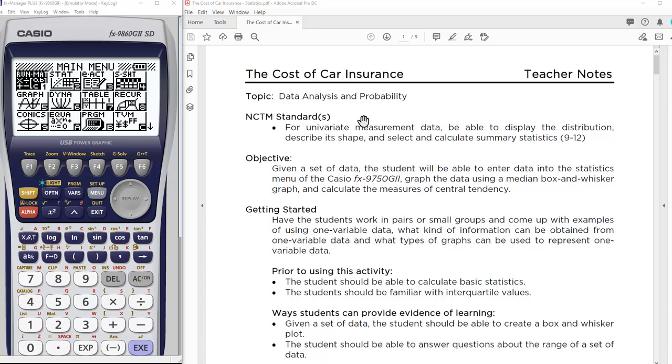This activity comes from our statistics book and says graphing with the 9750G2, but really any Casio graphing calculator will use the same steps. They're all menu-oriented. What might be different is where those things are on the menu, but the process and steps are the same.